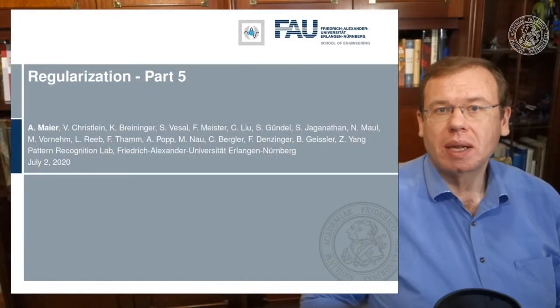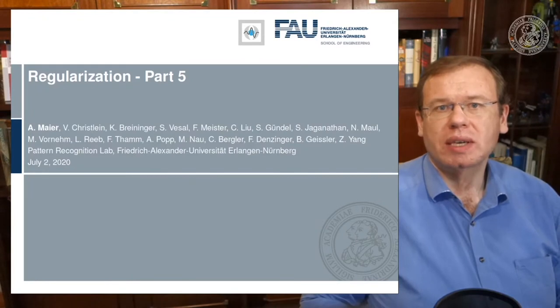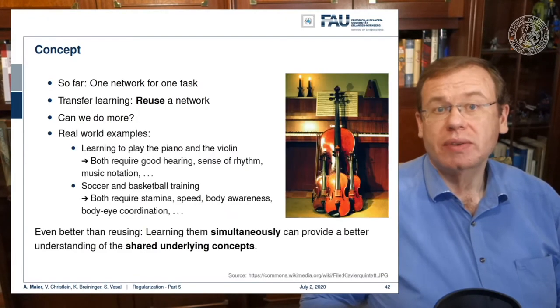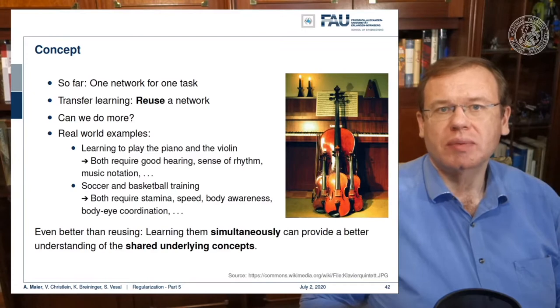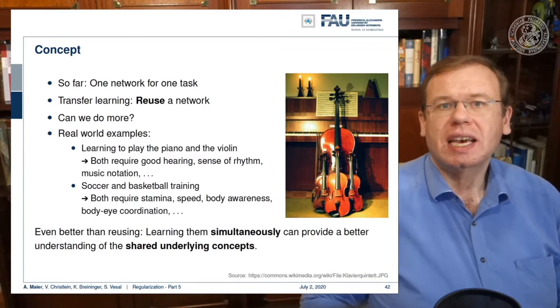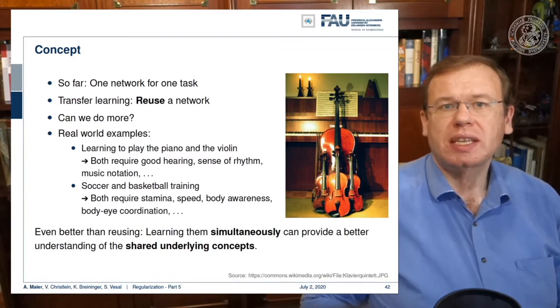Welcome everybody to deep learning. Today we want to conclude talking about different regularization methods. We want to talk in particular about one more technique called multitask learning. In multitask learning we want to extend previous concepts — previously we only had one network for one task, then we had transfer learning to reuse the network. The question is: can we do more, can we do it in a better way?